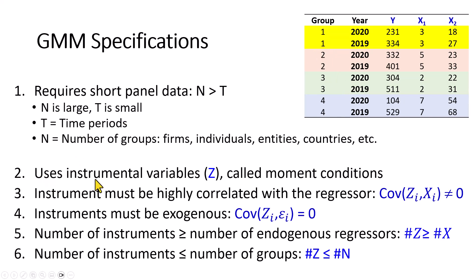Two, it chooses instrumental variables called moment conditions. Three, the instruments used must be highly correlated with the underlying regressor. Four, the instruments must be exogenous. Five, the number of instruments must be at least equal to the number of endogenous regressors. And finally, the number of instruments cannot exceed the number of groups.